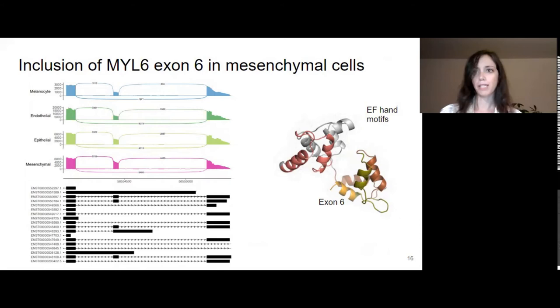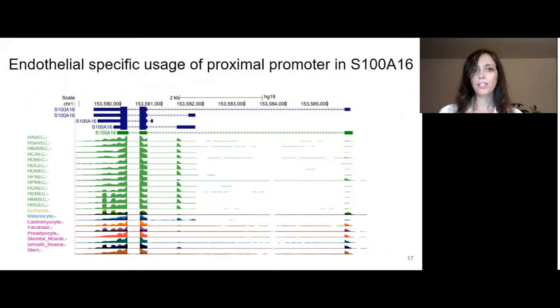We can also find a few cases of cell type-specific promoter usage. Here, I'm showing the example of a calcium-binding protein S100A16, where a proximal promoter is mostly used in endothelial cells and in melanocytes, while there is a distal promoter which is used in the other cell types. I'd like to emphasize that all this data is available as a resource on the ENCODE portal and in the supplementary tables of our paper.